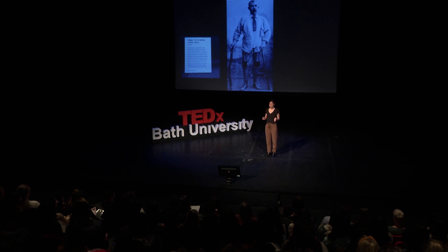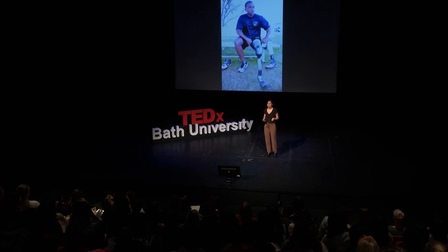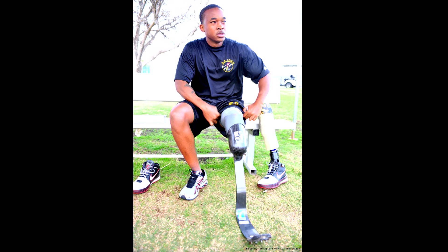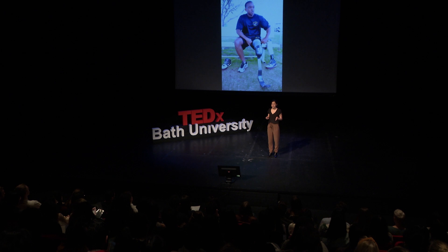Time moved on and nowadays we have many, many different prostheses — many different shapes and models that allow amputees to do many different kinds of activities. For example, there are prostheses designed for running. Nowadays there are prostheses that allow you to walk and provide you energy, prostheses with a lot of sensors inside, and prostheses that can provide feedback.